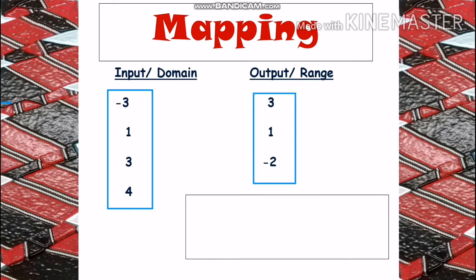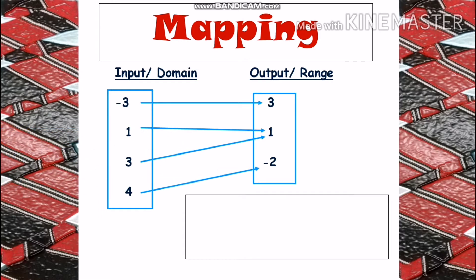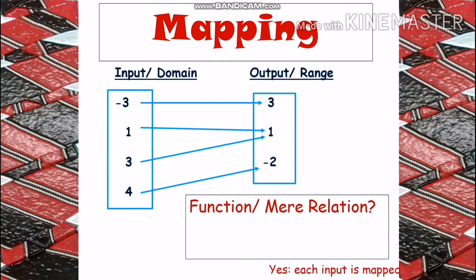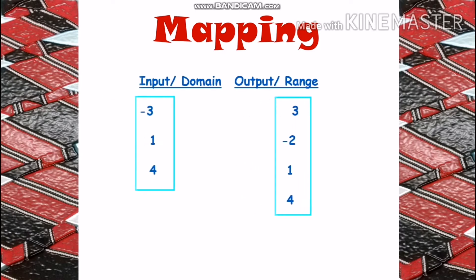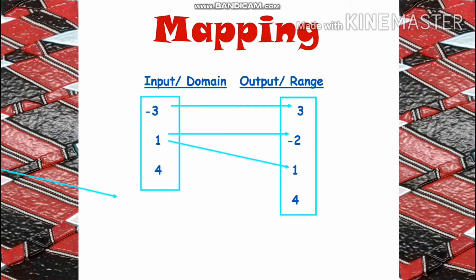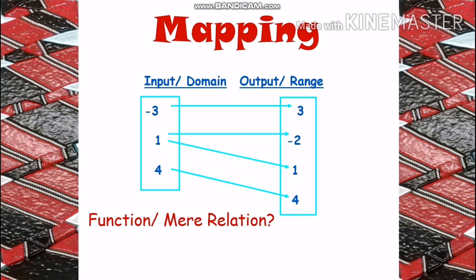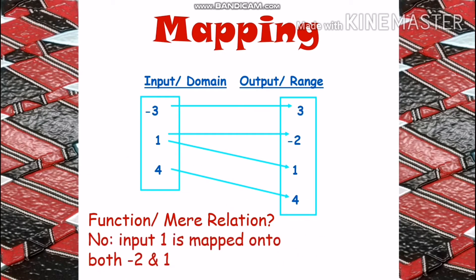Let us use the metaphor of receiving letters to identify if the following mappings are functions or mere relations. If negative 3 is mapped to 3, 1 is mapped to 1, 3 is mapped to 1, and 4 is mapped to negative 2 — this is a function since every input number is mapped onto exactly one output number. How about this: negative 3 is mapped to 3, 1 is mapped to negative 2, 1 is mapped to 1, and 4 is mapped to 4? This is not a function but simply a mere relation — input 1 is mapped onto both negative 2 and 1, and the message will not be delivered well.